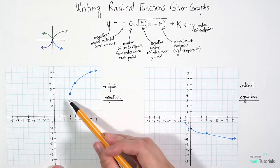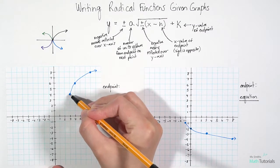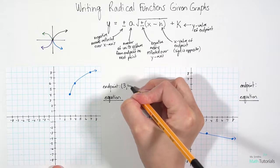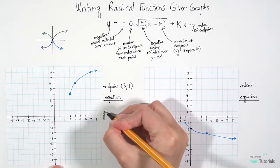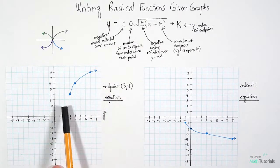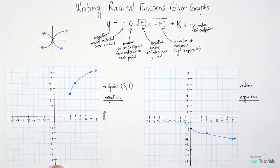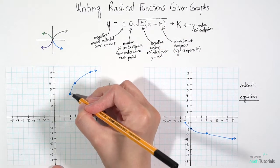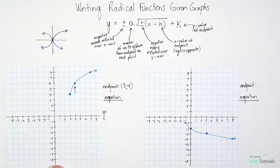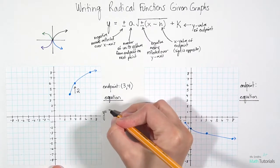Let's dive right in. For this first one, the endpoint falls at 3 on the x-axis, 4 on the y-axis, so the endpoint is (3, 4). When we write our equation, we start with y equals. Is it reflected over the x-axis? No — this is just standard. Our 'a' is the number of units up or down from the endpoint to the next point. Going from this point to that point, I've moved up two units, so my a-value is 2.